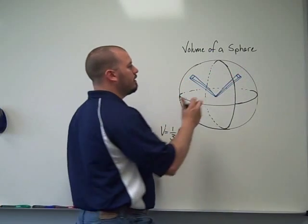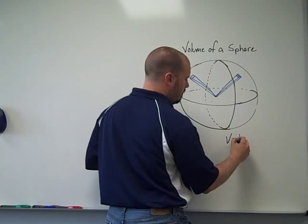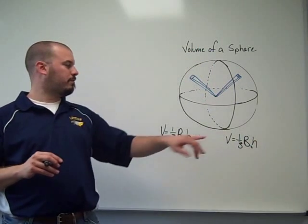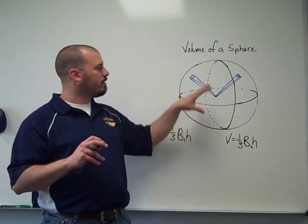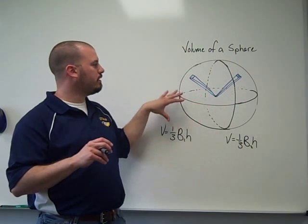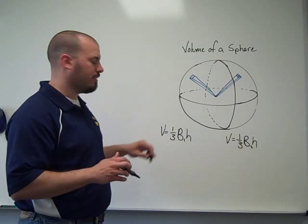And we'll call that one two. One-third area of base two times the height. Again, I said we were going to cut the whole sphere into pyramids so that we're using up the whole surface of the sphere there. So we would have a whole bunch of volumes of pyramids added together.